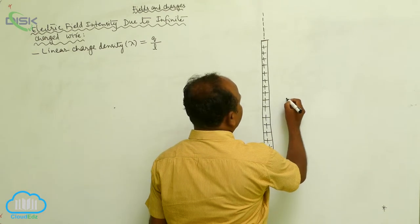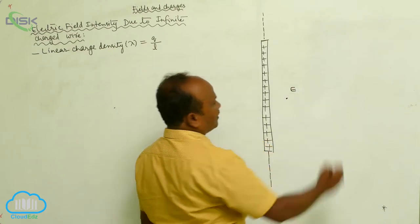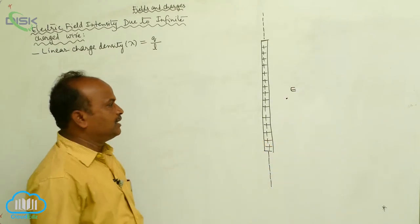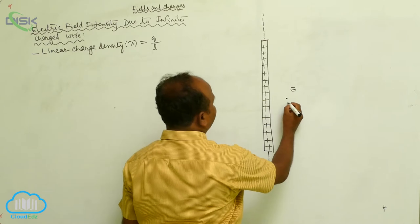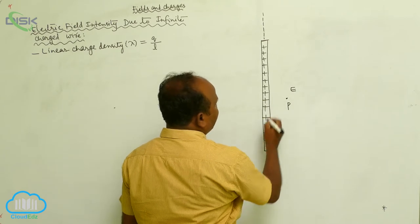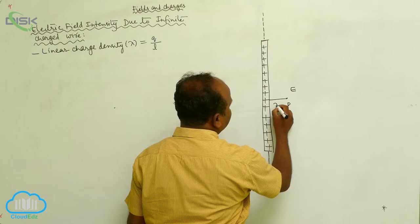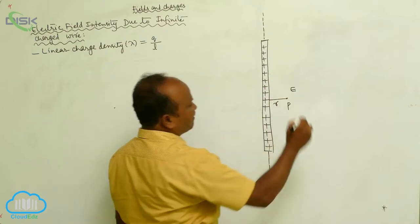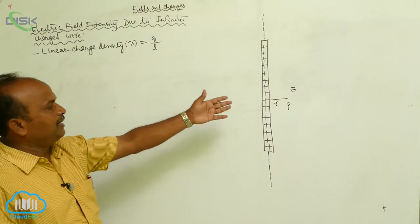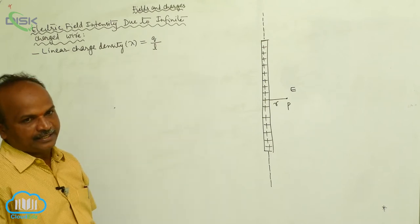I want to calculate the electric field intensity at a particular point. Let us consider this is the point P. It is at a perpendicular distance R from the wire. At that point, I want to calculate the electric field intensity.